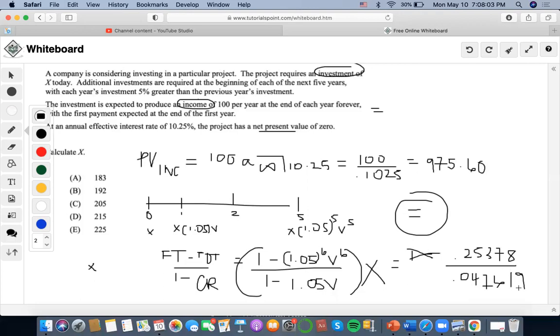5.329. I'm going to get 183.07, which will be my answer, which is A.